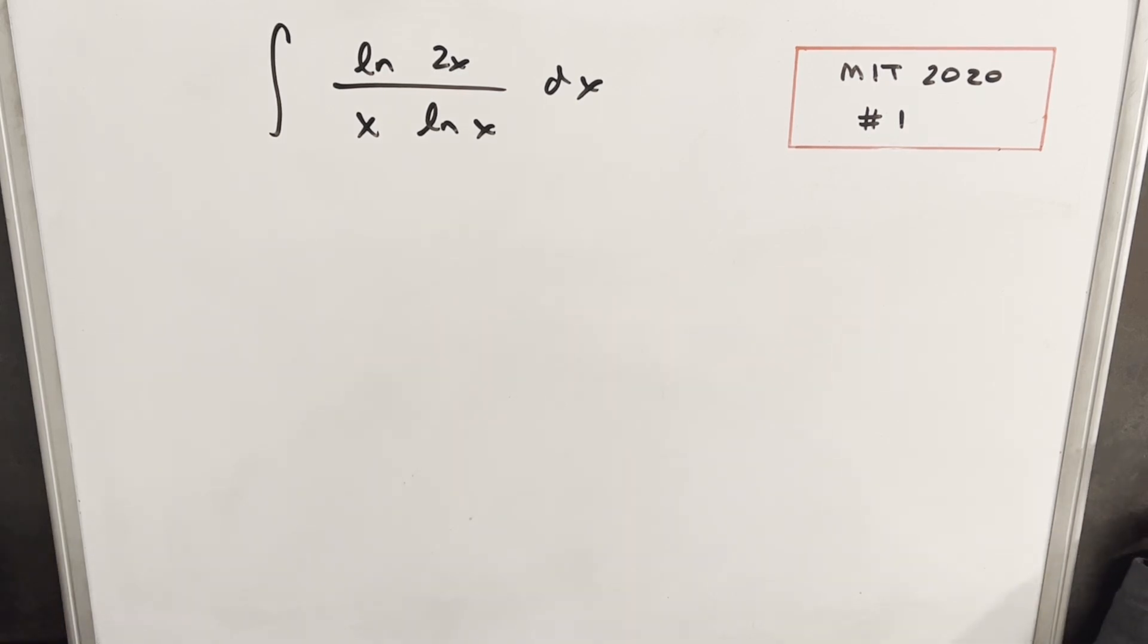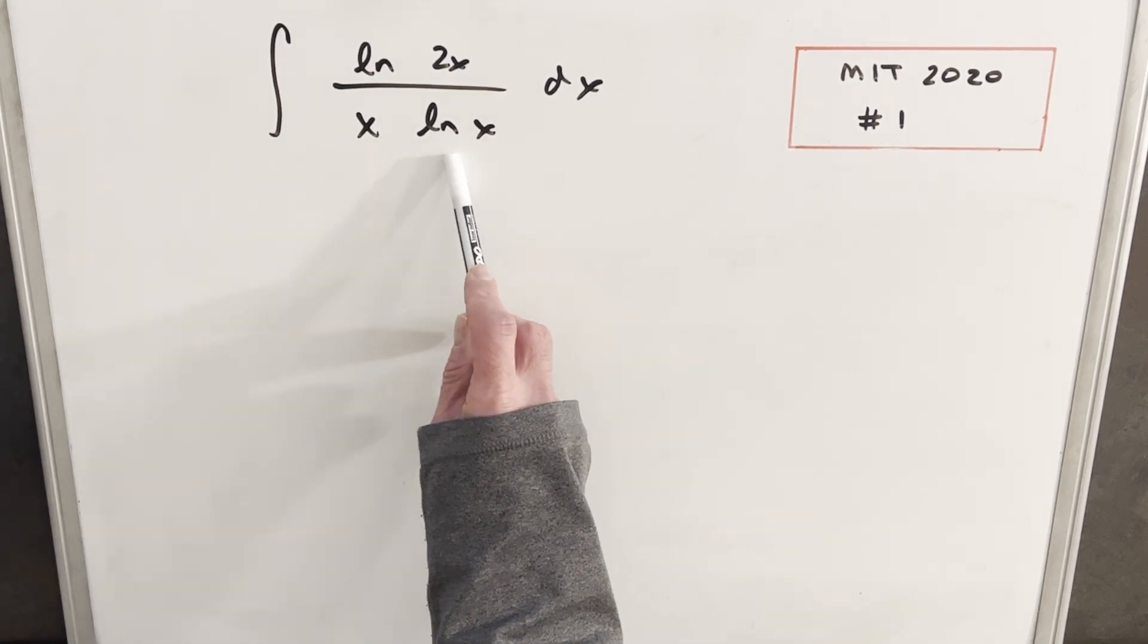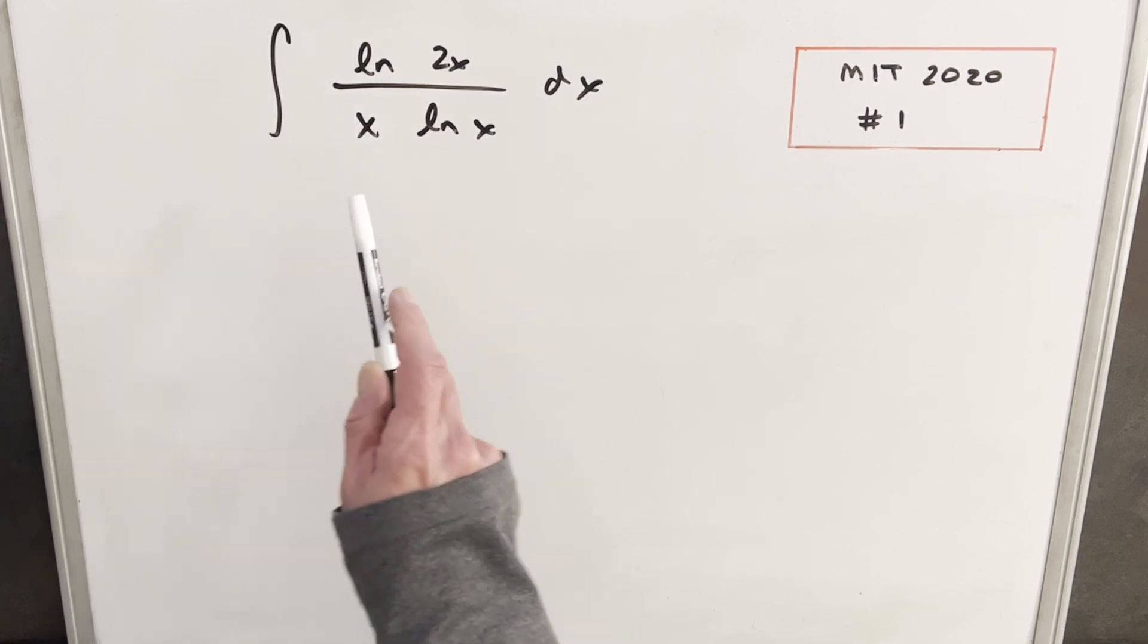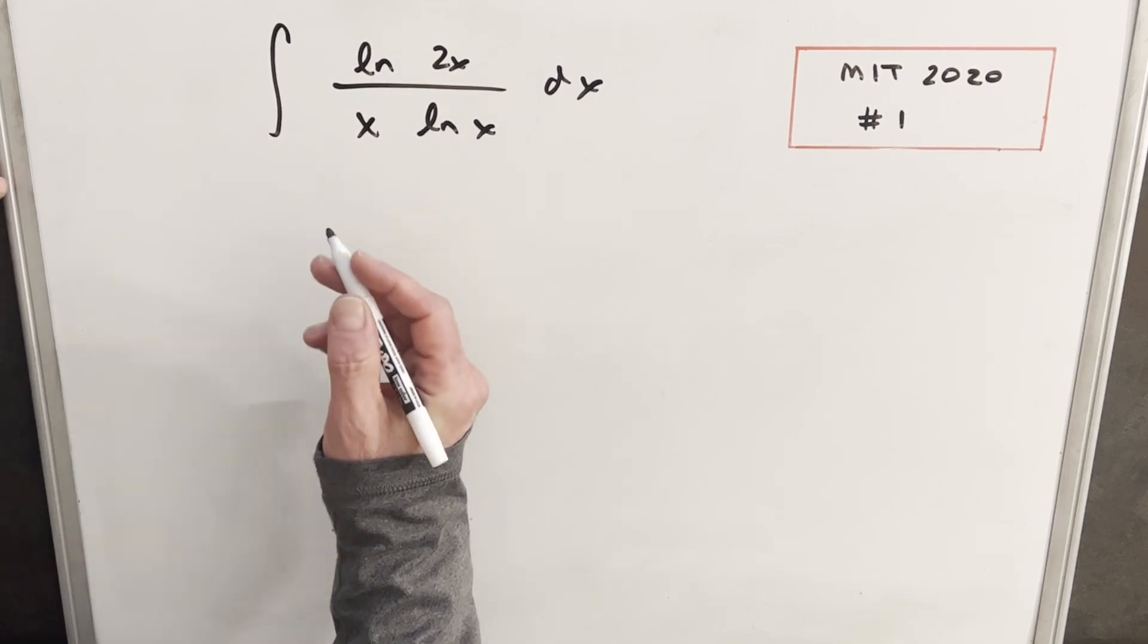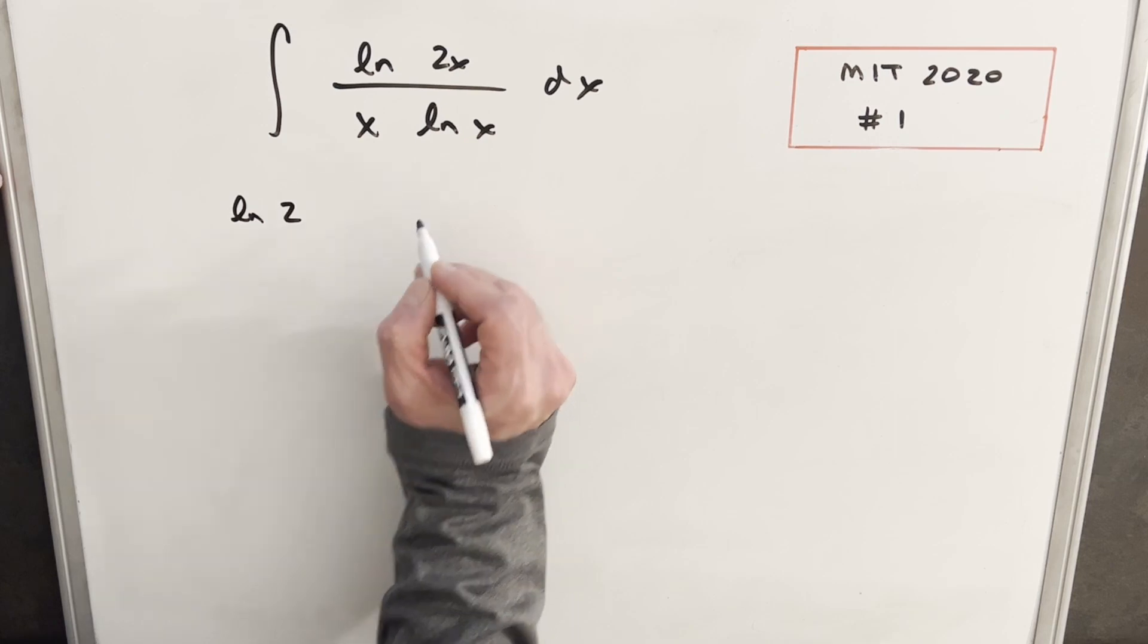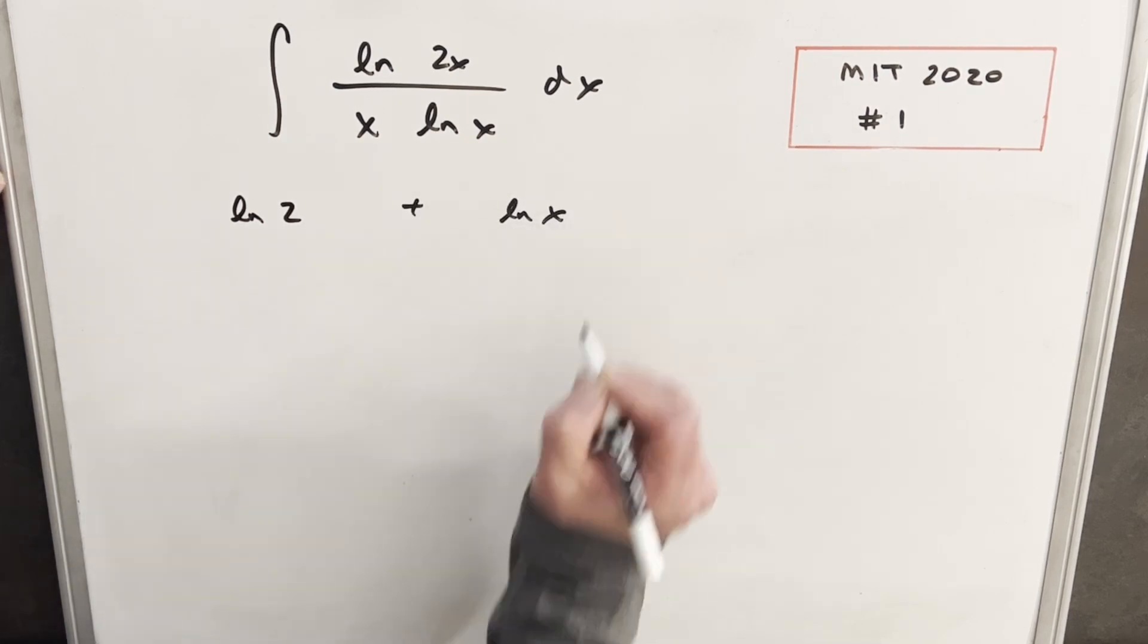We have here problem number one. This is the integral of ln 2x over x ln x dx. This doesn't look too bad because we're set up for u substitution. If we make ln x our u, we have our 1 over x right here. I'm just going to need to do something to handle this ln 2x in the numerator. So what I can do is use log properties and break that out.